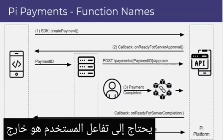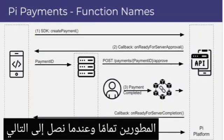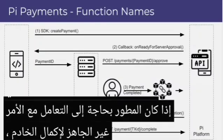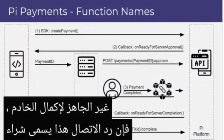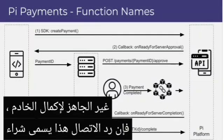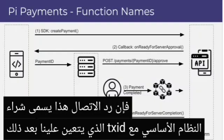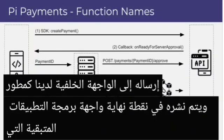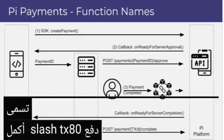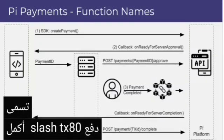The whole part where user interaction is needed is completely out of the developer's control. When we get to the next event the developer needs to handle, which is onReadyForServerCompletion, this callback is called by the Pi platform with a transaction ID that we then have to send to our back end as a developer, and it gets posted to the REST API endpoint called payment/{txId}/complete.